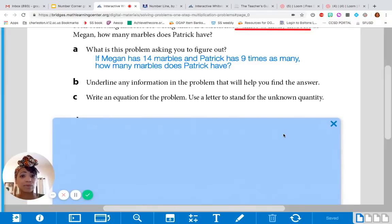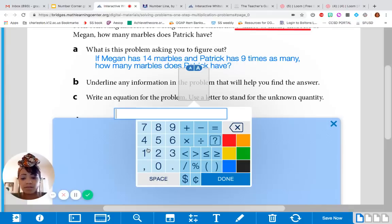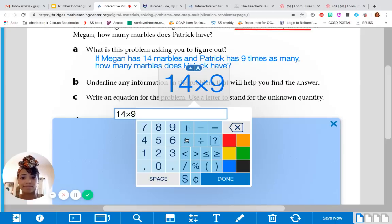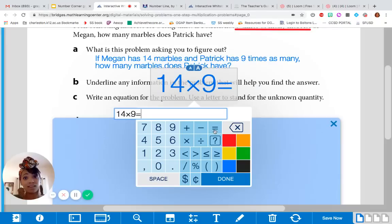Earlier, you guys said we need to do 14 times nine. So, let's do it. 14 times nine. Are we done? Is that our equation? No? We need an equal sign? You're right. This would be an expression. But we need an equation, which means we have something, we have an equal sign, and then we should have an answer. Well, we don't know the answer yet.